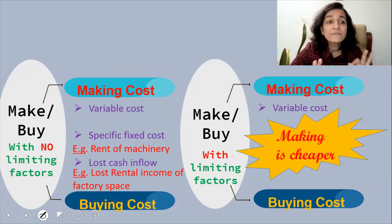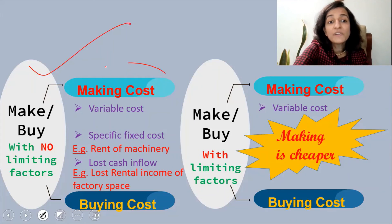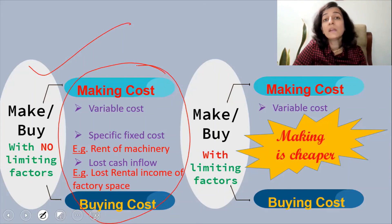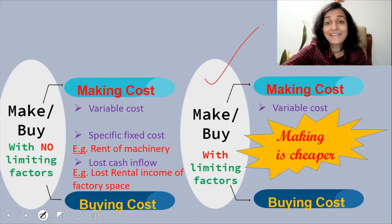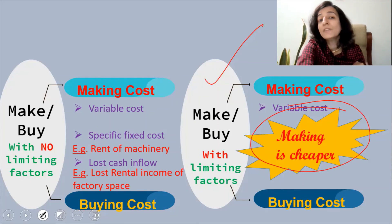So the primary difference is that in the first scenario we are trying to find out whether making or buying is cheaper, but in the second scenario we already know that making is cheaper.